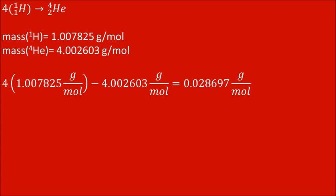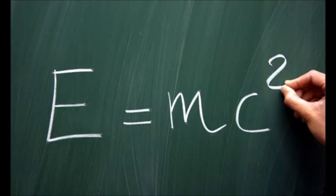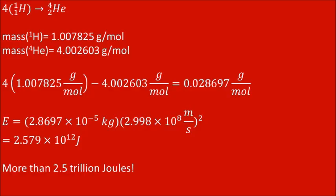So what happened? The mass was converted to energy. You may be familiar with the equation E equals mc squared. We will actually use it here. We convert the mass loss to kilograms, and multiply it by the speed of light squared, to get the energy released, and we get 2.579 times 10 to the 12th joules.